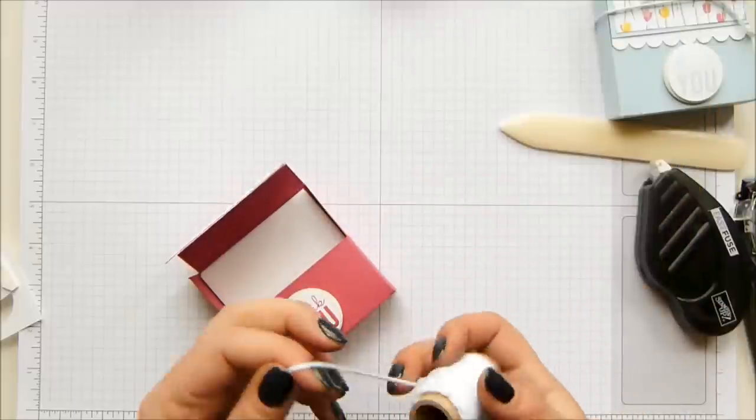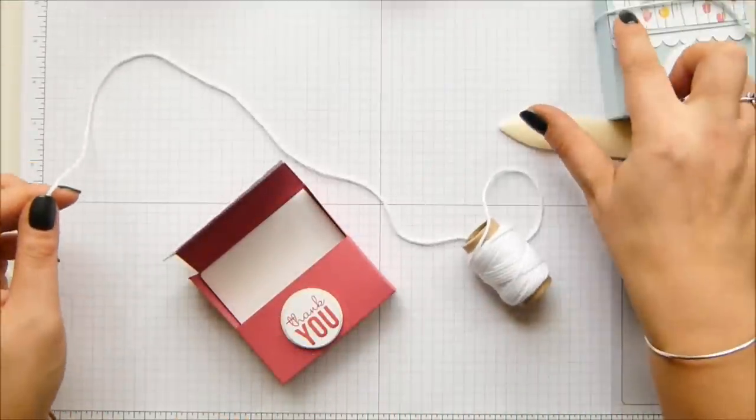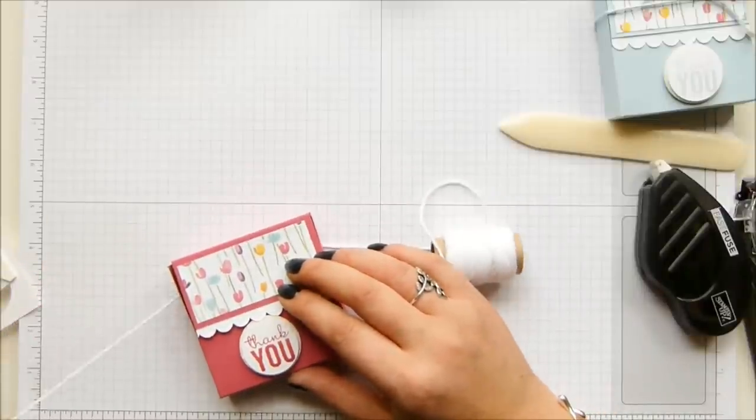So this is the Painted Blooms thick baker's twine. And you get three colors. You get the soft sky, you get wild wasabi, and then you get the whisper white as well.